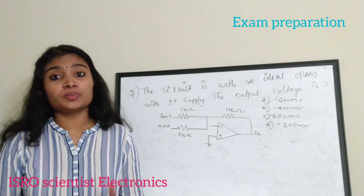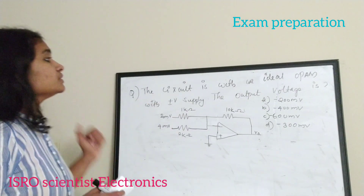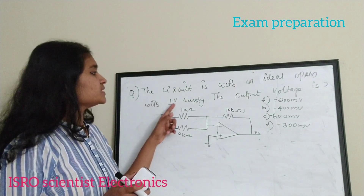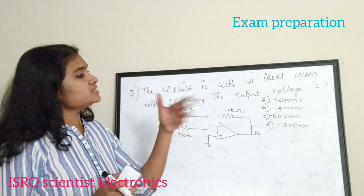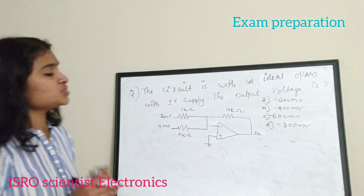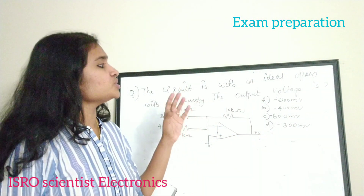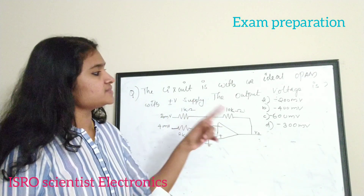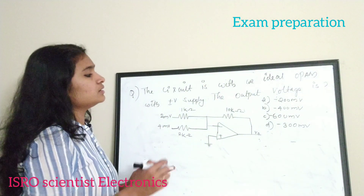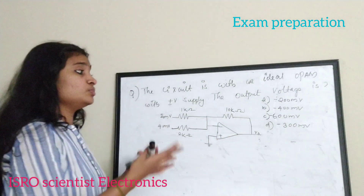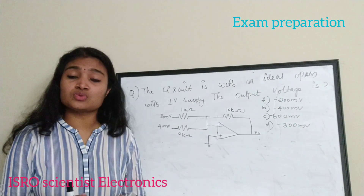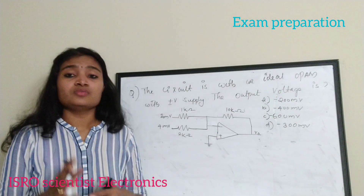The next question is from the operational amplifier session. The question is: the circuit uses an ideal op-amp with ±V supply; find the output voltage. The options are: a) −200 mV, b) −400 mV, c) −600 mV, d) −300 mV. You have a circuit connected with an operational amplifier and you have to solve for the output voltage.